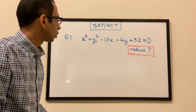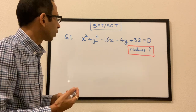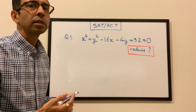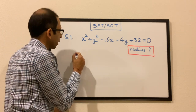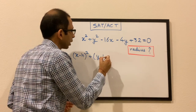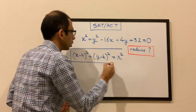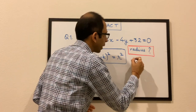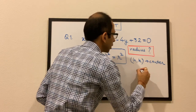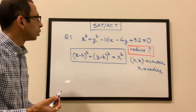As we would have seen in some of the previous episodes, a circle can be represented by an equation. We need to understand the standard form of a circle — how we represent the circle in its extended form — which is given by (x − h)² + (y − k)² = r², where (h, k) is the center of the circle and r is the radius.